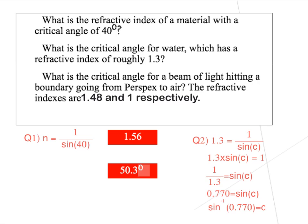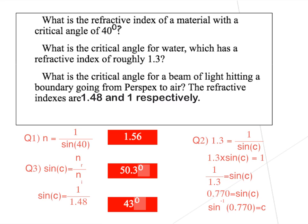For question 3, using sine c equals N_R over N_I with both values given: sine c equals 1 over 1.48. Applying sine minus 1 to both sides gives a final answer of 43 degrees. In the next tutorial we will look at using the critical angle for total internal reflection, both for the transmission of light and information.